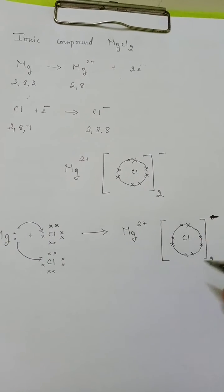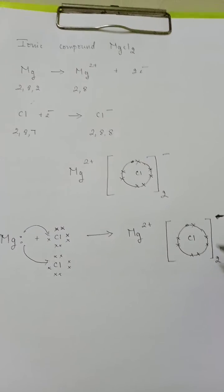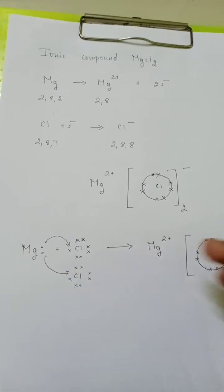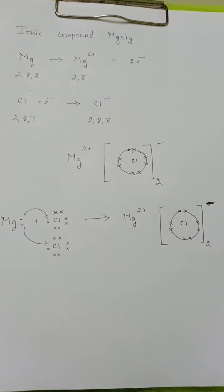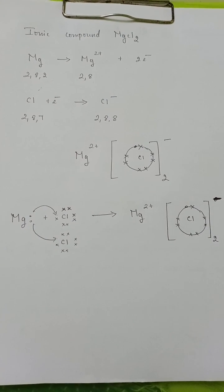So Mg2+ and Cl- twice makes Cl2-. That is why the formula for magnesium chloride is MgCl2. Hope you understood. Bye-bye.